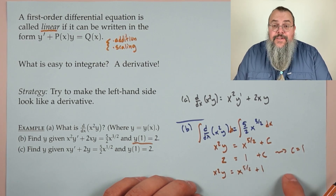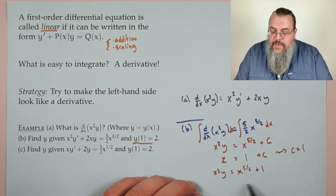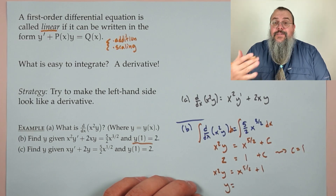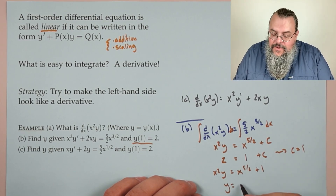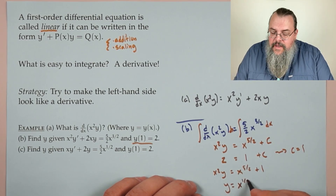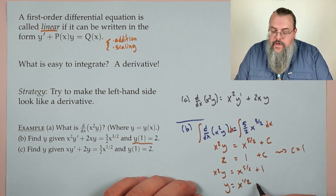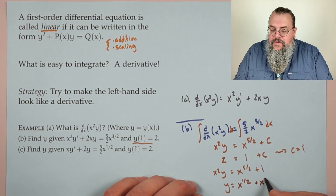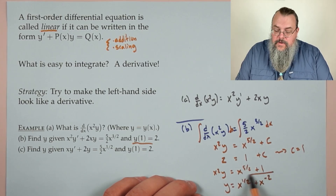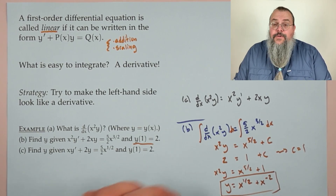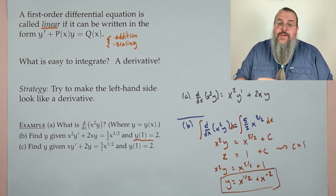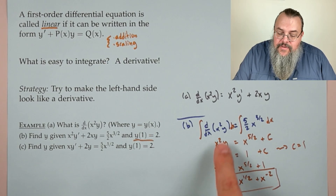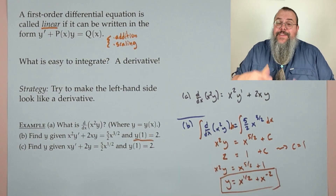Divide by x²: y = x^(5/2)/x² + 1/x². Subtracting exponents: 5/2 − 2 = 1/2, so y = x^(1/2) + x^(−2). We found y — it wasn't bad because we knew how to handle the left-hand side.